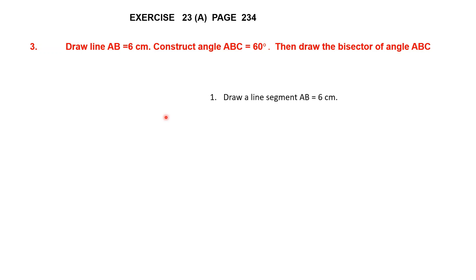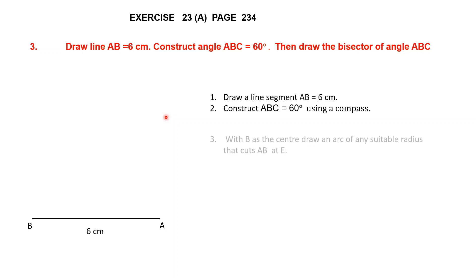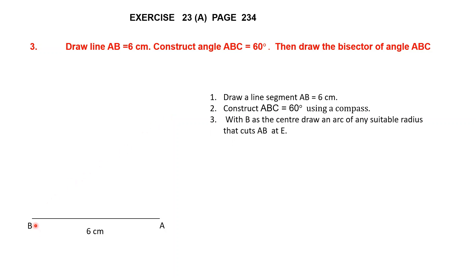First step: draw line segment AB equal to 6 centimeters. So we have a line segment AB that is 6 centimeters. Second step: construct angle ABC equal to 60 degrees using a compass. We're going to keep B as the center and draw an arc. Take your compass, take any measurement on it, place the needle on B and draw an arc. This arc will cut line BA at a point E.